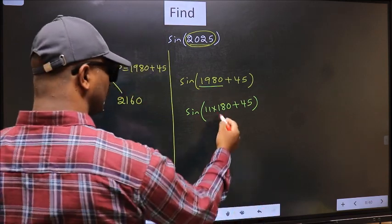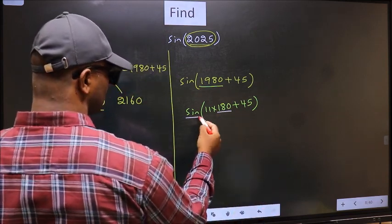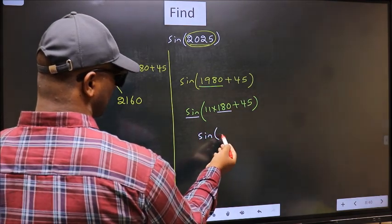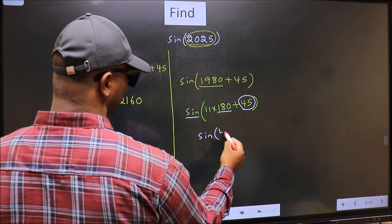Next, here we have 180. So sine is not going to change. It will remain sine, and inside we get this angle 45.